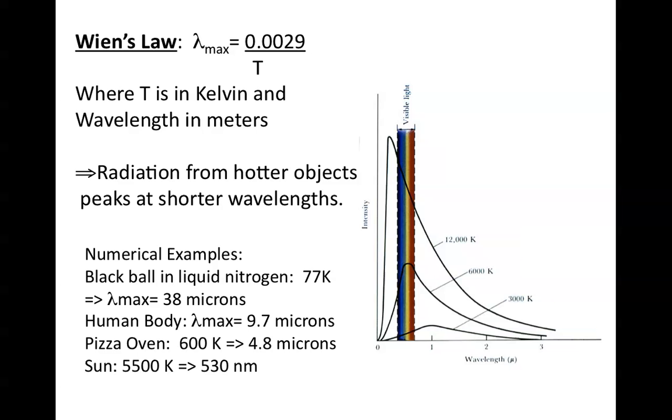A human body, one of our bodies, is about 300 degrees above absolute zero, and its peak is at about 10 microns, 9.7 microns. A pizza oven is about 600 degrees above absolute zero in Kelvin temperature, and its peak is at about 5 microns.